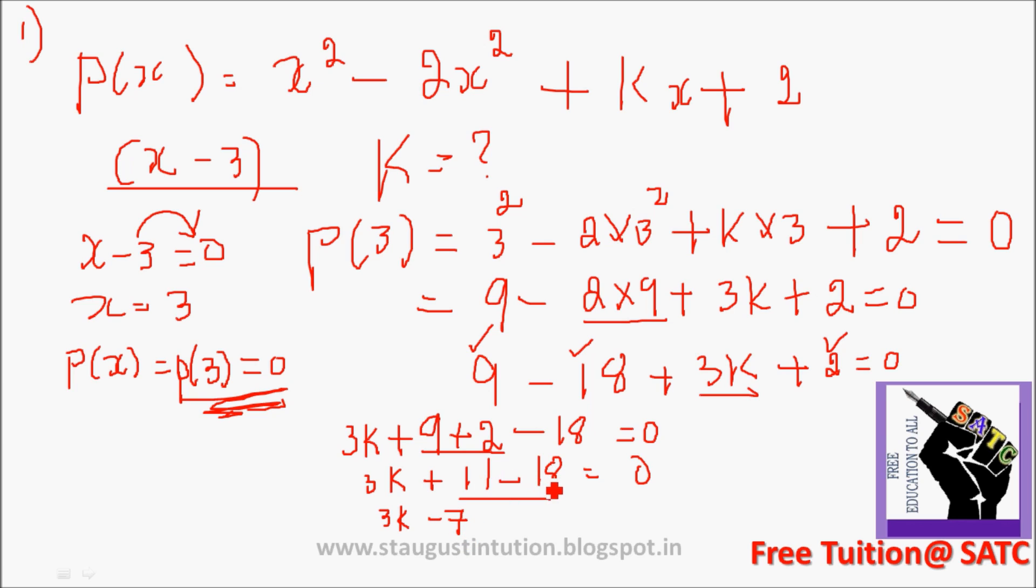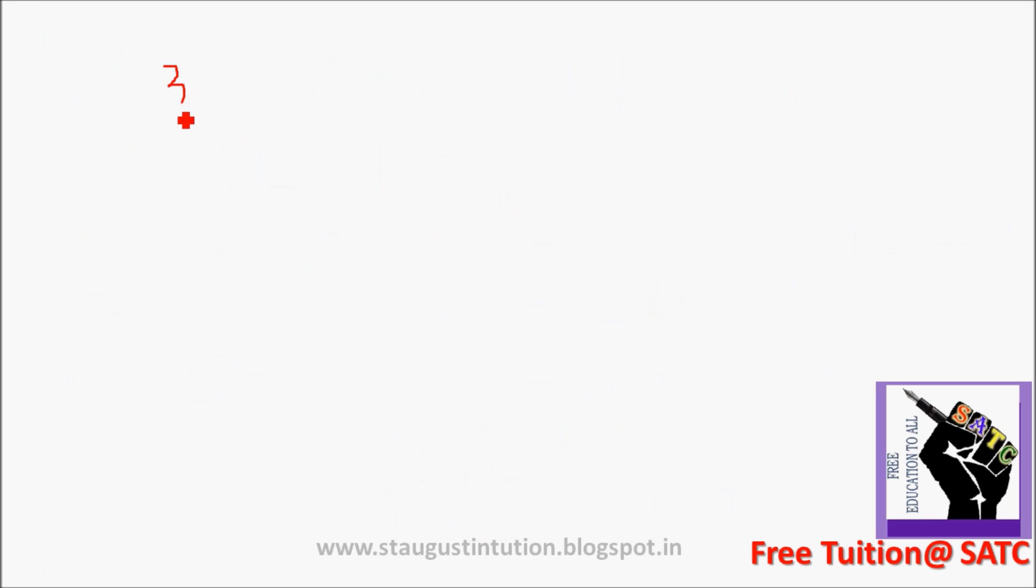3k is equal to minus 7. Minus 7 plus 7. This implies 3k is equal to 7. So 3k is equal to 7. Therefore k is equal to 7 by 3.